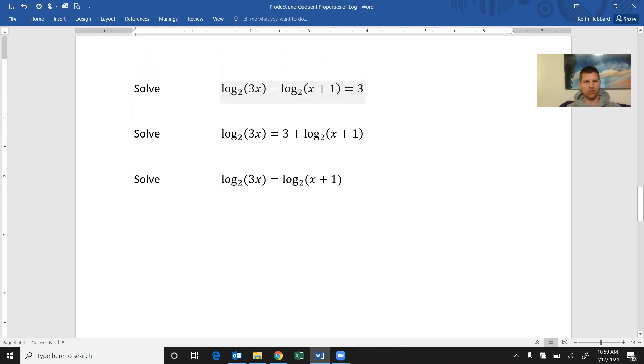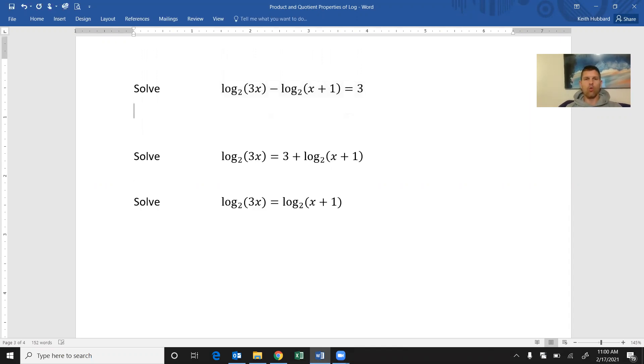Log base 2 of 3x minus log base 2 of x plus 1 equals 3. Well, when you've got two logs and a number right here, what I'm going to try and do is condense these two logs. Enter the log properties. So what do you do when you see a subtraction of the output of logs? I should say both logs have base 2, so that's a good thing.